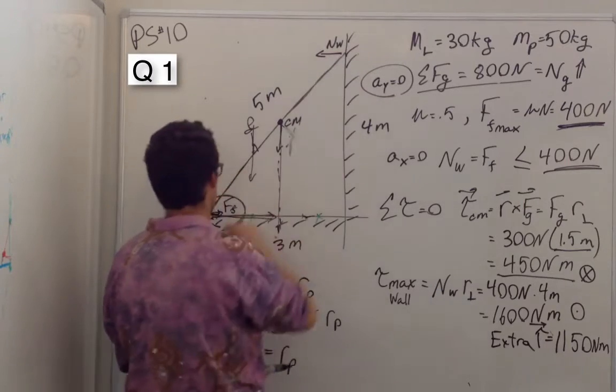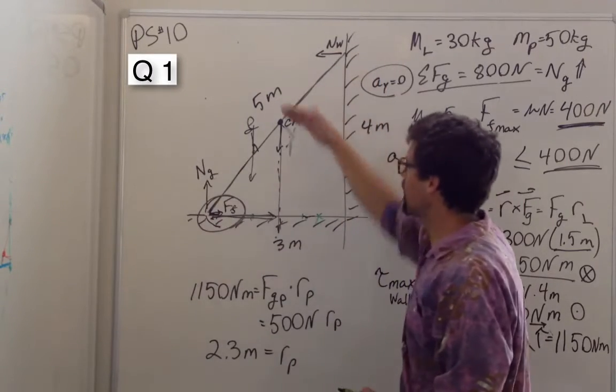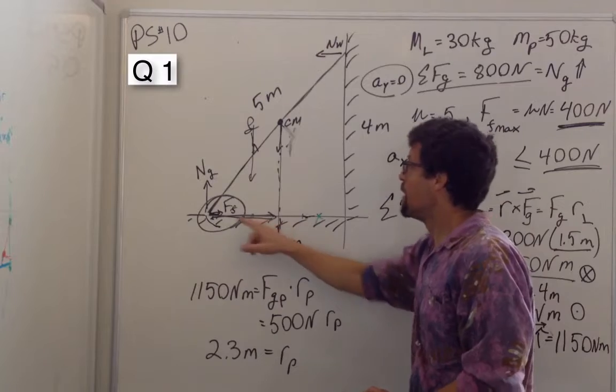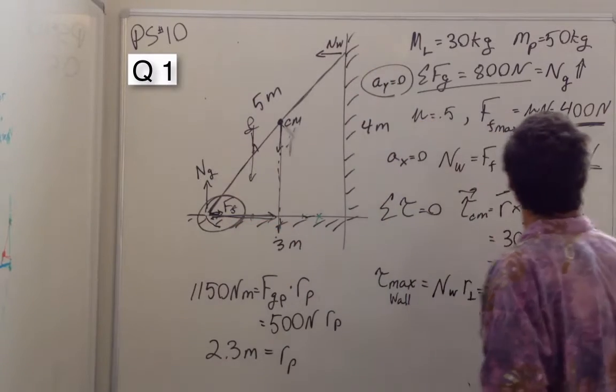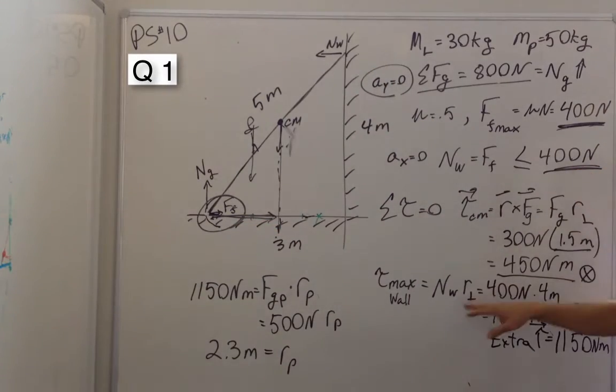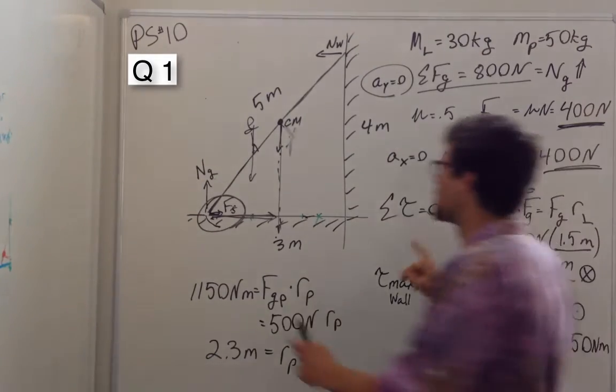But the wall provides a huge amount of torque in the other direction if we need it. Because its maximum force is 400 newtons and acting at a distance of 4 meters. Why 4 meters?